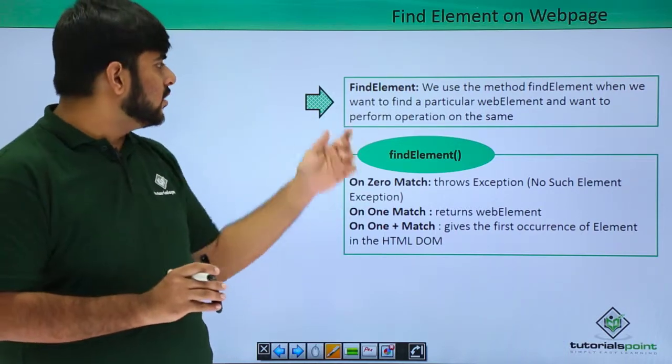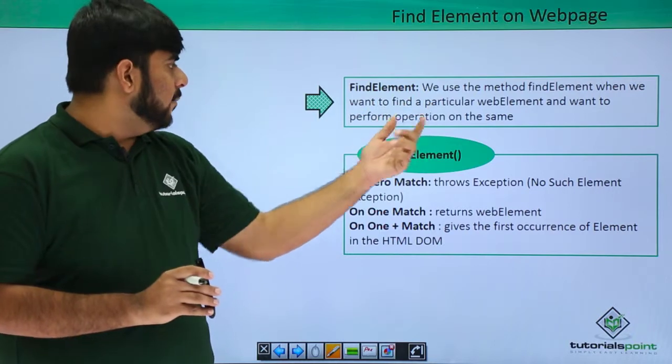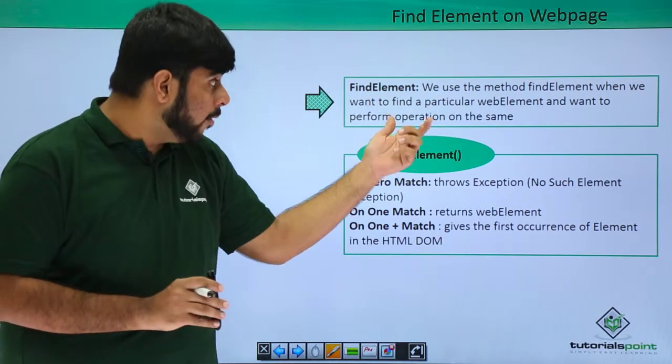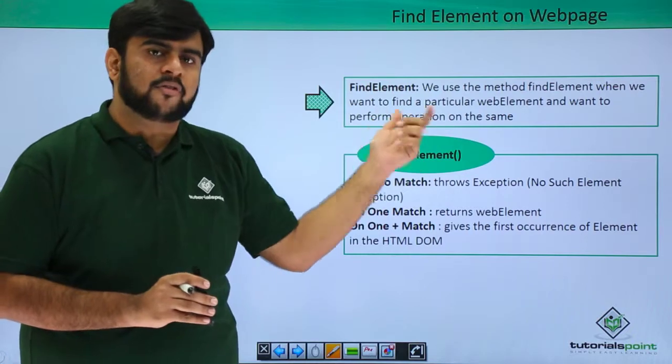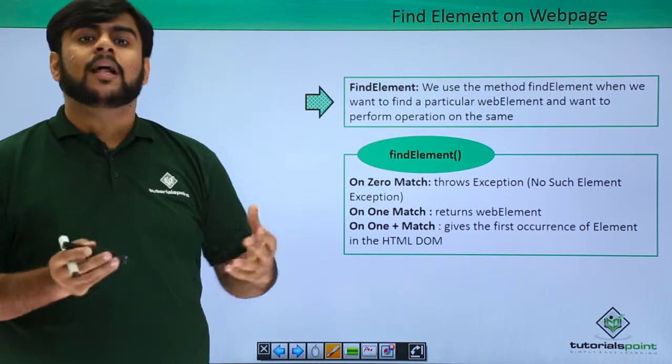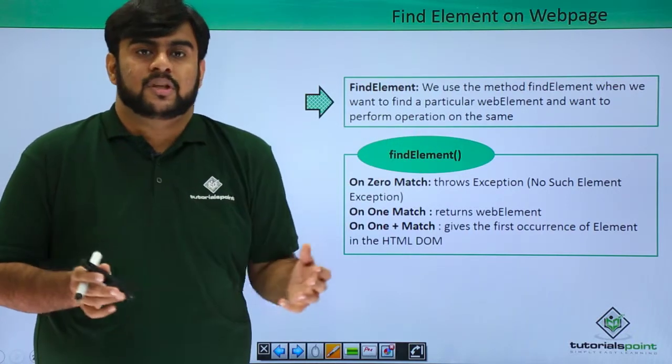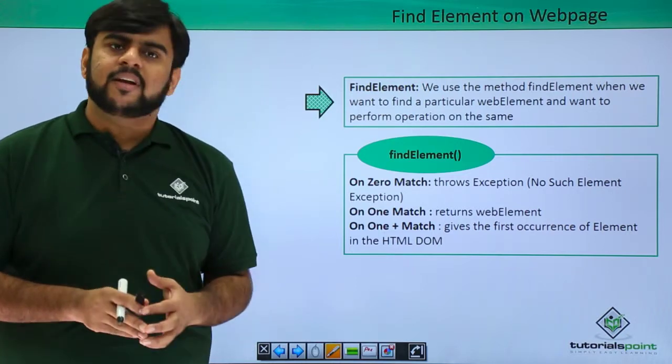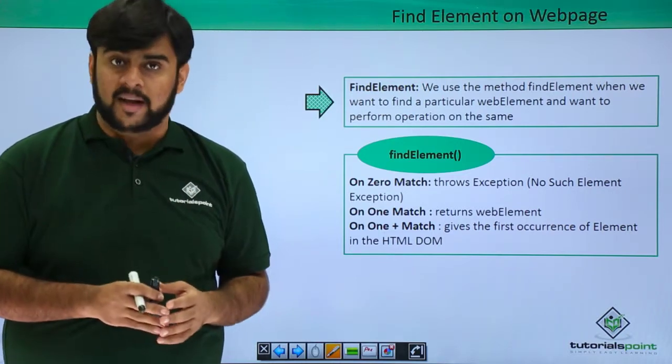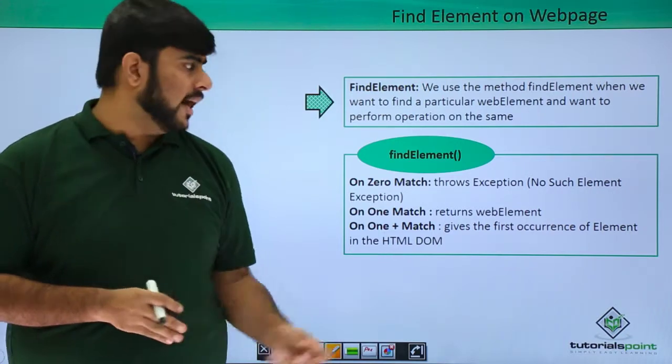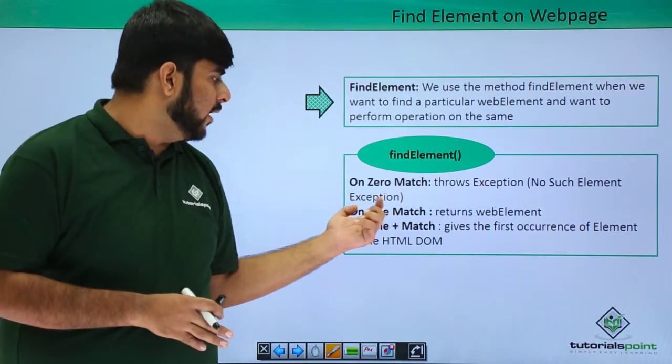So, this function is used to find an element when we know about the particular element and have to perform an operation on the same. Now, what happens if there is no such element found? If there is no such element on the page, then we get an exception as no such element exception.